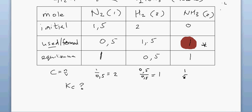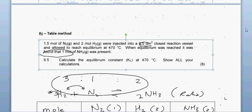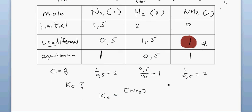Now we can work out the Kc value. Kc equals the concentration of products over the concentration of reactants, each raised to the power of their balancing numbers. So Kc = [NH₃]² ÷ ([N₂]¹ × [H₂]³). The balancing number for NH₃ is 2, for N₂ is 1, and for H₂ is 3.